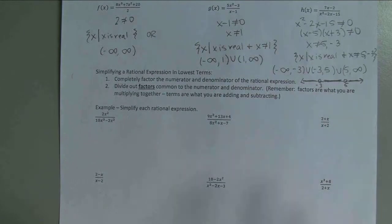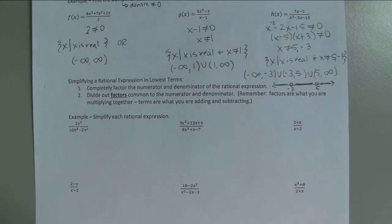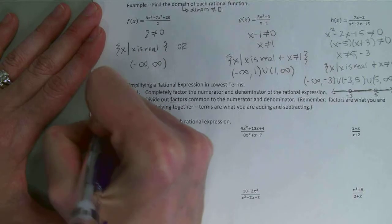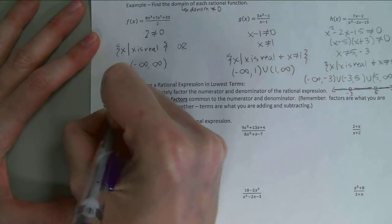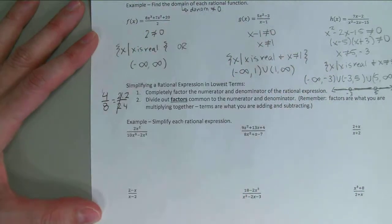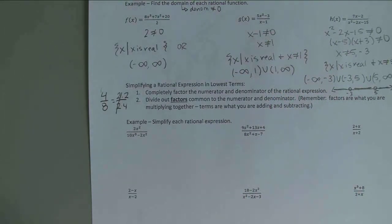Let's go ahead and start working on simplifying. How do you simplify a normal fraction? Like 4 over 8 — you find common factors and reduce to 1 half. That's what we're going to do here, except they're not just normal numbers; we're going to have to factor them. Just like we did in chapter 13, we factor — but we're going to have to factor twice: once on top, once on bottom.